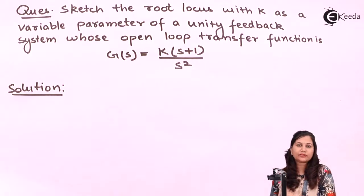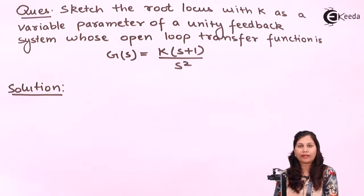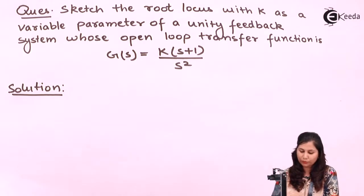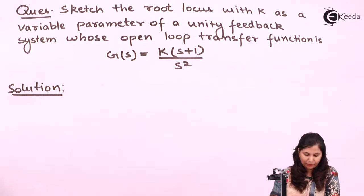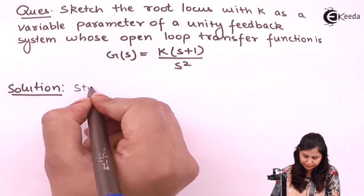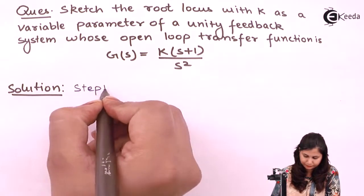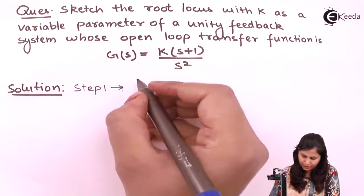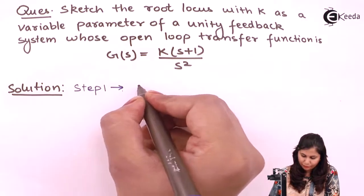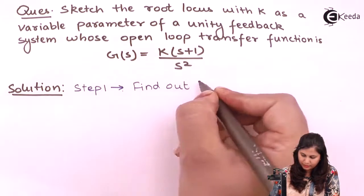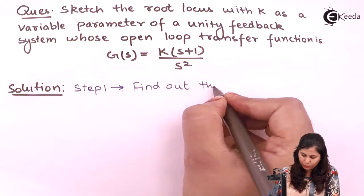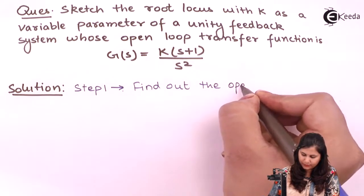To sketch the root locus, first we have to find out the open loop poles and zeros of this system. So our first step will be to find out the open loop poles and zeros.